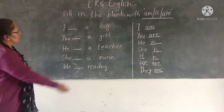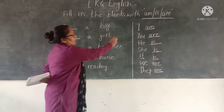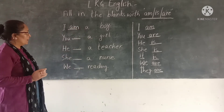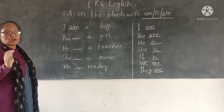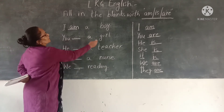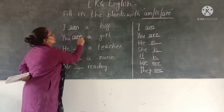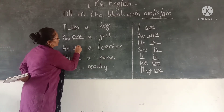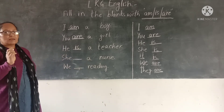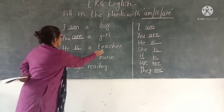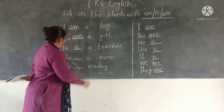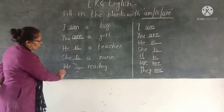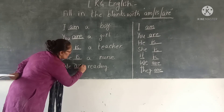Now we are coming to our sentences. After I, we write AM — I am a boy. You are not going to write 'I is a boy.' You are a girl — ARE. He is a teacher. She is a nurse. We are reading.